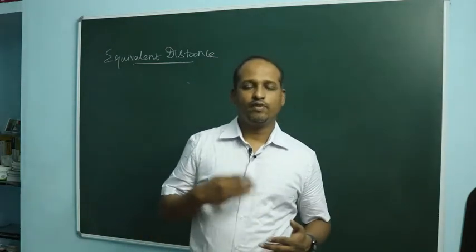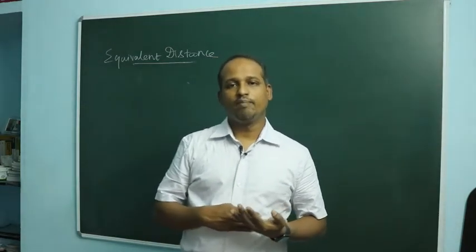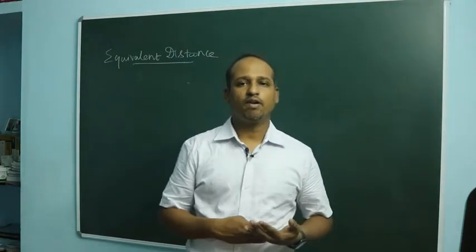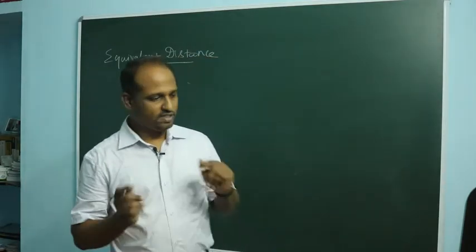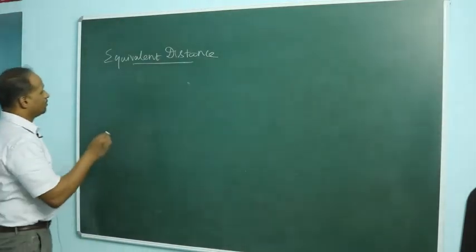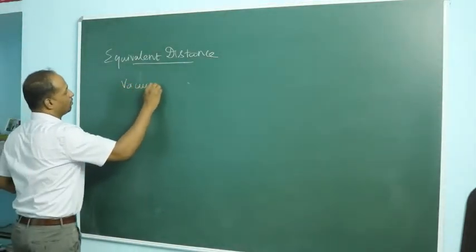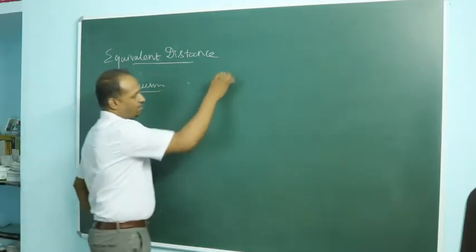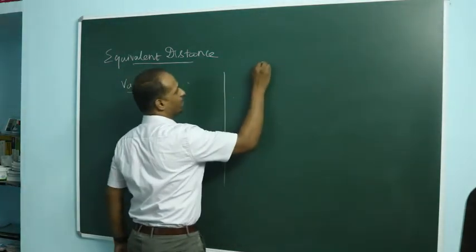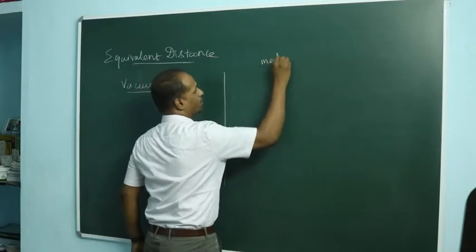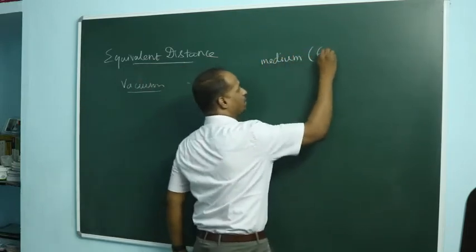In this video, we will find out the equivalent distance between vacuum and a medium of dielectric constant epsilon r. Suppose this is vacuum on one side, and on the other side there is a medium of dielectric constant epsilon r.